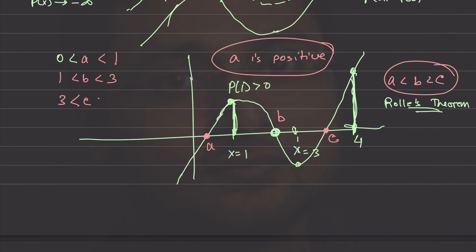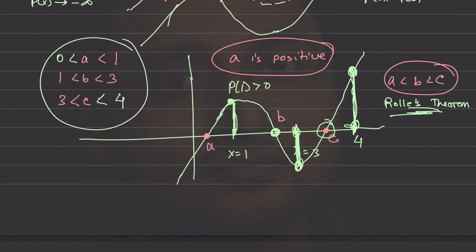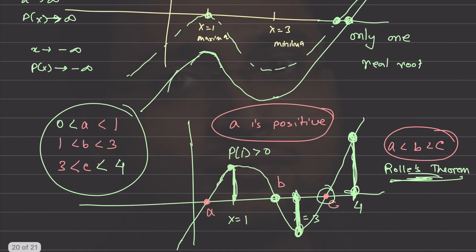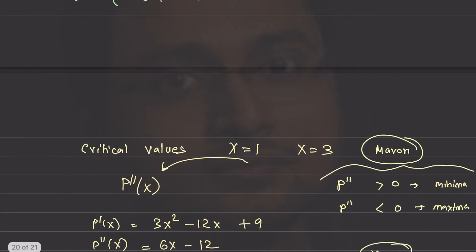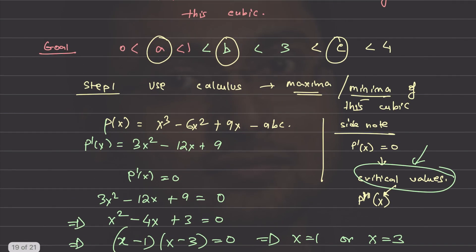By continuity of this function, there is a root between 3 and 4, so c < 4. We have all the pieces together. We used Rolle's theorem, maxima and minima via calculus, and squares and signs. We solved this beautiful problem from ISI Entrance. Check the link in the description for a free toolbox with resources and problems, and keep on doing great mathematics!